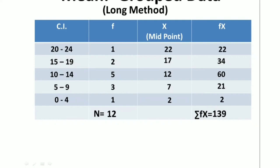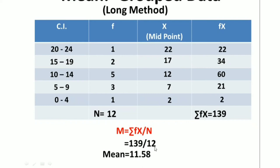Now we put these values into the formula: M equals summation of fx divided by n. The summation of fx is 139 and n equals 12. So the answer will be 11.58. The mean is 11.58.